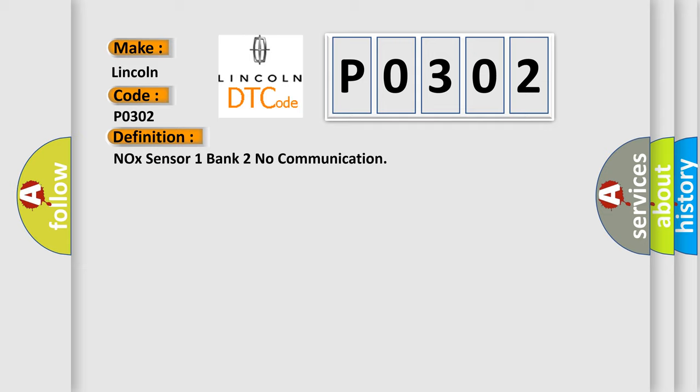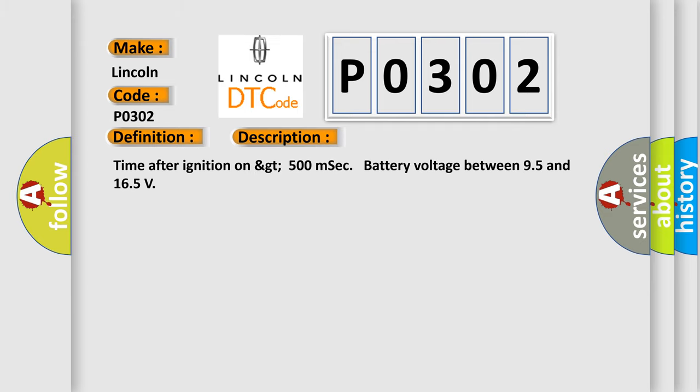And now this is a short description of this DTC code: Time after ignition on GT 500 milliseconds, battery voltage between 95 and 165.